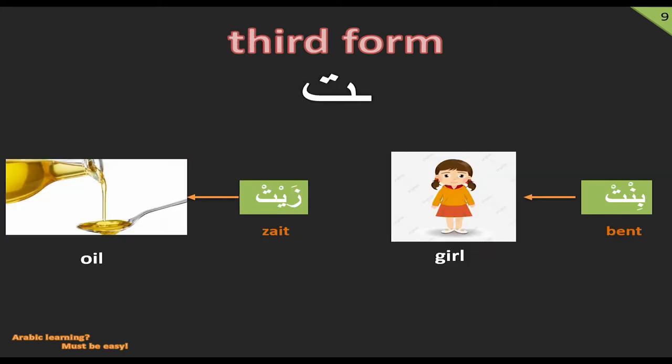We have two examples of the third form of Ta. First, the noun 'Bint', which means girl or miss. There is kasra under Ba, sukoon on the letter Nun, and then sukoon on Ta. The second example uses the word 'Zayt': fatha on Zay, sukoon on Yaa, and sukoon on Ta. Zayt means oil. That was all about the third letter Ta.